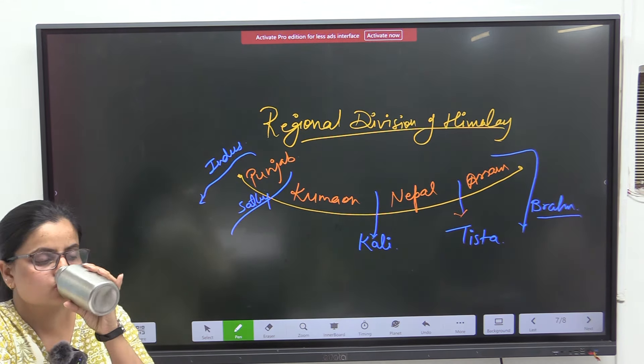Then we covered the Tropic of Cancer — how many states it passes through. Tripura was one, Jharkhand was there too.